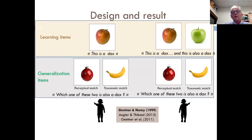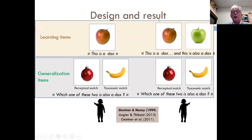The only difference between these two situations is the presence of only one learning item in the first condition and two learning items in the second. And notably, in both cases the apples — whether one or two — are more perceptually similar to the perceptual match. That was intentional.